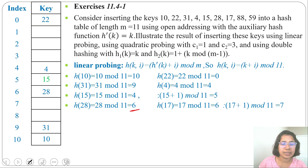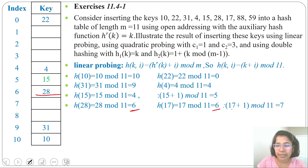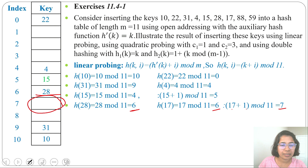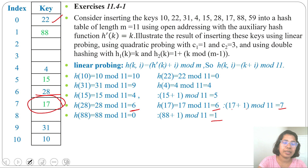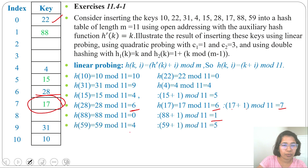Next, 17 divide 11 remainder is 6. Slot 6 is already filled, so we compute 17 + 1 mod 11 = 7. Slot 7 is empty so we insert 17 at slot 7. Next, 88 divide 11 remainder is 0. Slot 0 is already filled, so we compute 88 + 1 = 89 mod 11 = 1. We insert 88 at slot 1.